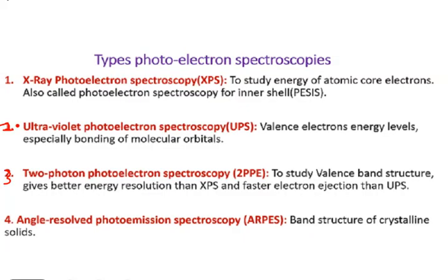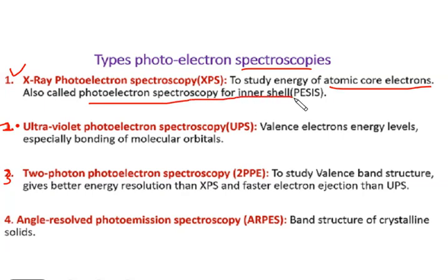Now we will see the types of photoelectron spectroscopies. The first one is x-ray photoelectron spectroscopy, which is used for the study of atomic core electrons. This is also called photoelectron spectroscopy for inner shells because it is used for the study of core electrons, and x-rays are used as the radiation source.